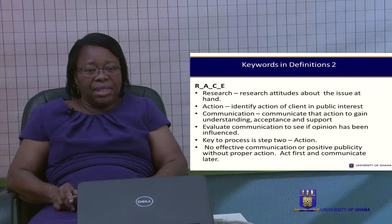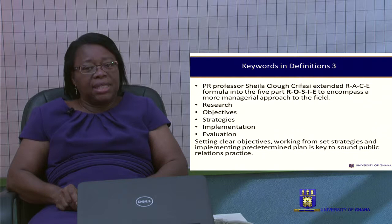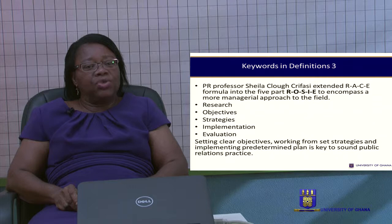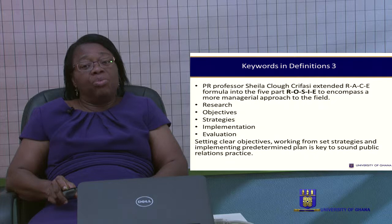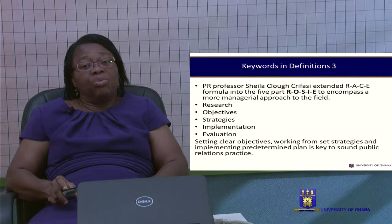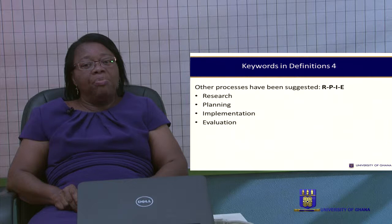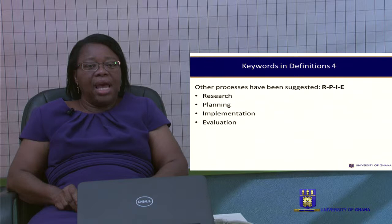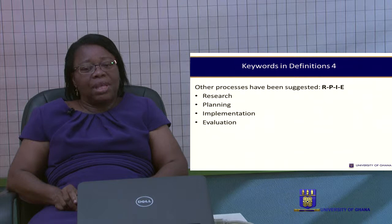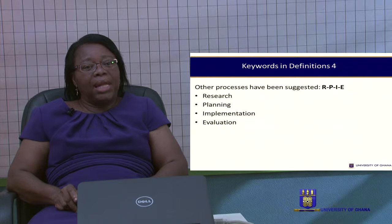There is another professor, Sheila Krisfasi, who extended the RACE formula into the five-part ROSIE: Research — again, research into the activity you're doing — set your Objectives, give your Strategies, Implement them, and then Evaluate. There is also what we call RPIE: Research, Planning, Implementation, and Evaluation. So in considering PR, there are a number of steps to take: definitely the research aspect, the planning, the communication, implementation or actions, and then evaluation.